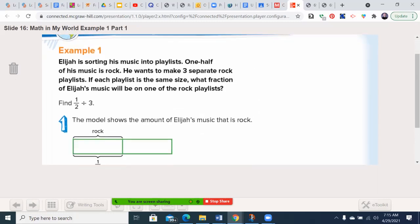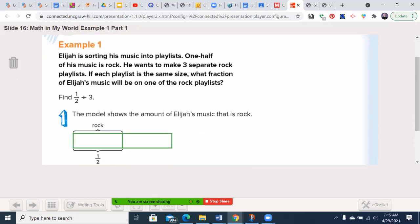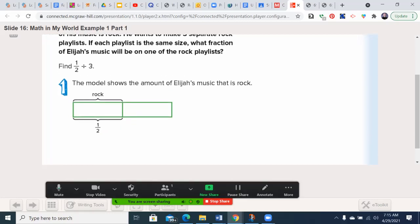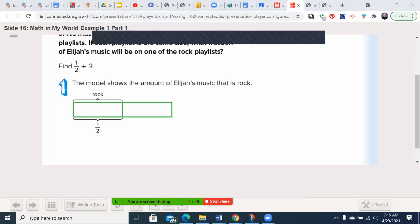That way you have an artifact, an example. Elijah is sorting his music into playlists. 1/2 of his music is rock, so here's your rock. He wants to make three separate rock playlists. If each playlist is the same size, what fraction of Elijah's music will be on one of the playlists?